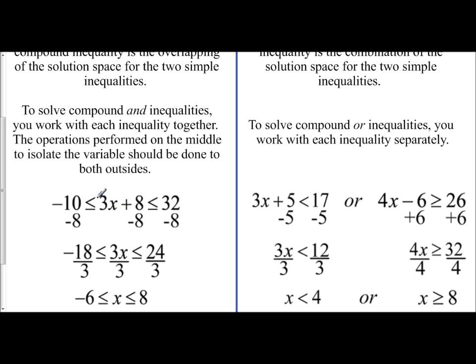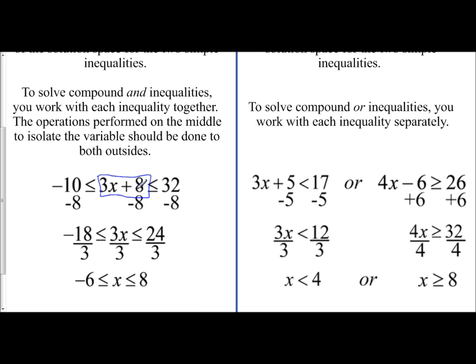So what you want to do is you want to focus on the middle portion. And you have to ask yourself, how do I isolate that variable by itself? And so in this example, I would have to get rid of the positive 8. And so I subtract 8. And you can see that right below it.